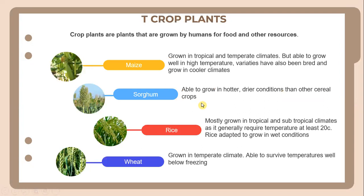Decode plants are plants that are grown by humans for food and other resources. We have maize, sorghum, rice, and wheat. Maize is grown in tropical and temperate climates and is able to grow well in high temperatures. Varieties have also been developed to grow in cooler climates.